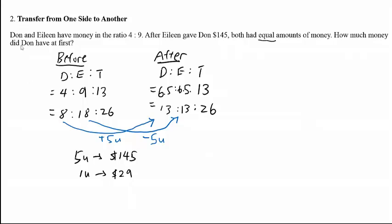Our job is to find Don's amount at first. Don at first is 8 units. Be careful not to take the after value — 8 units is the before amount. So for 8 units, you take $29 times 8, and the answer is $232.